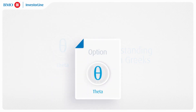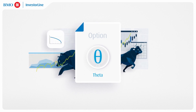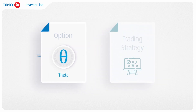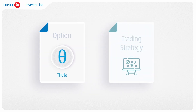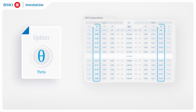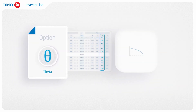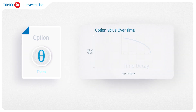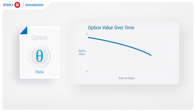Whether you're a seasoned trader or just starting, understanding Theta can significantly impact your trading strategies and outcomes. So it is critical to have a solid understanding of Theta when trading options. Theta, also commonly referred to as time decay, is one of the Greek letters used in options trading to measure the daily impact of the extrinsic value of an option.